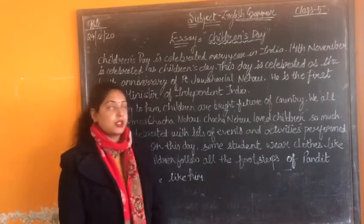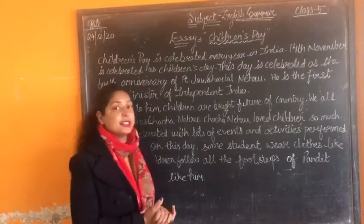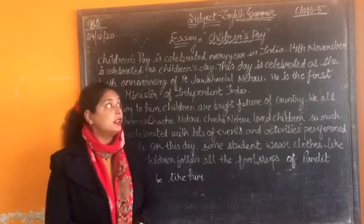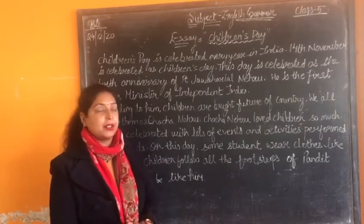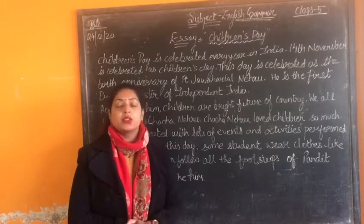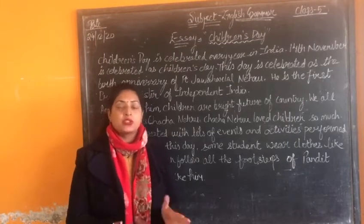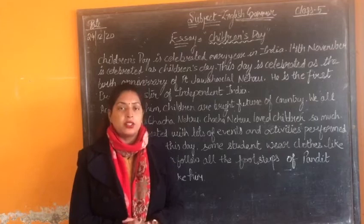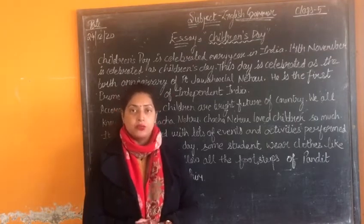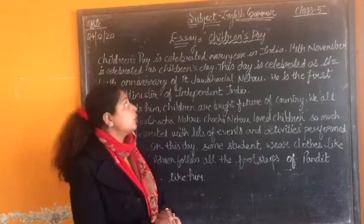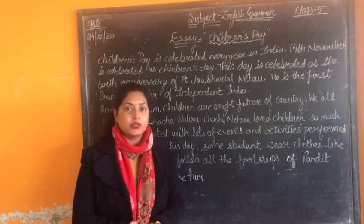For this course we are going to start. Today's date is 24 December, your class is English grammar, and your class is 5th. In today's class we are going to discuss an essay. I suppose you have all written in your grammar register as I gave you as homework. The essay we are going to discuss in this class is Children's Day.